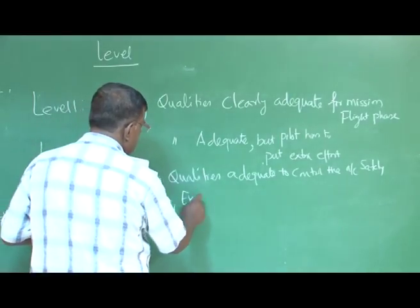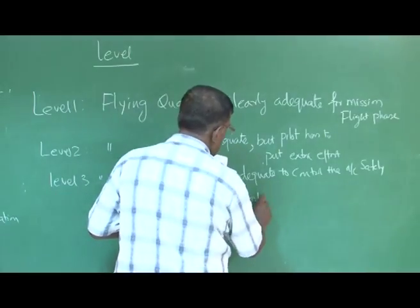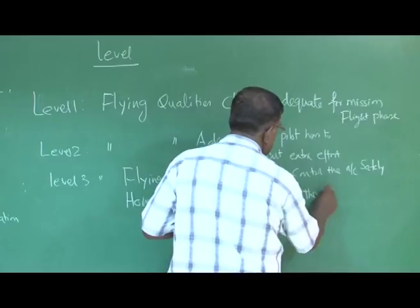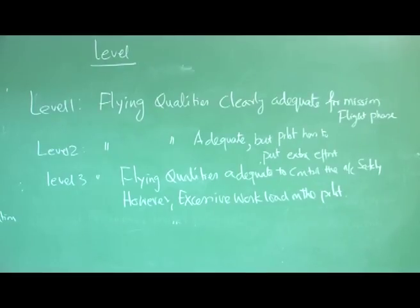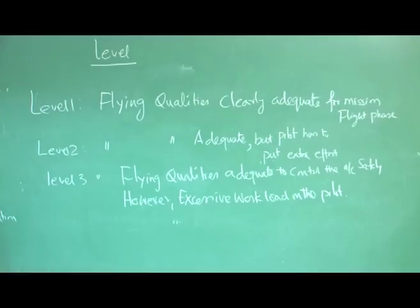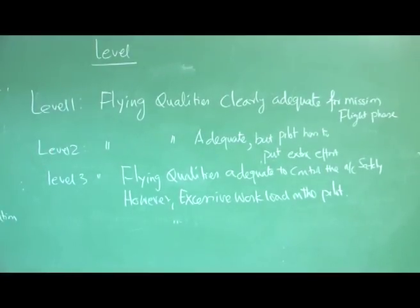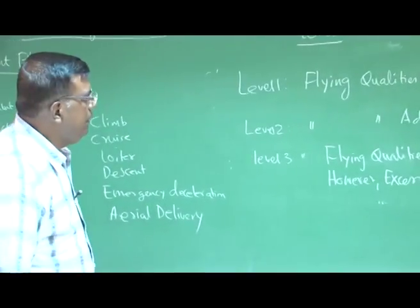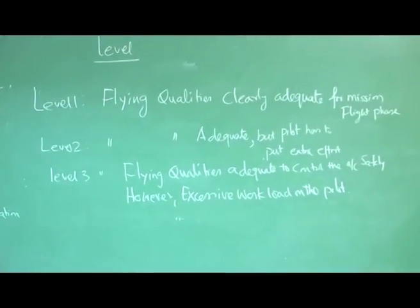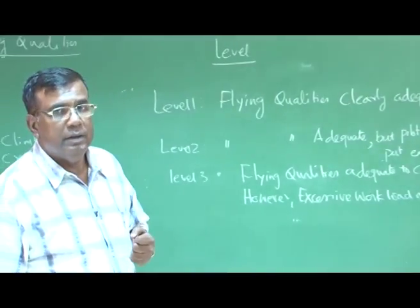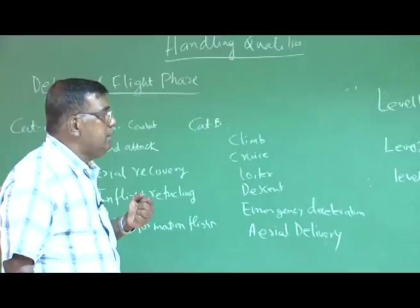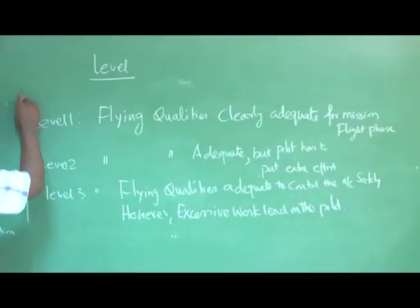Level 1 says flying qualities are clearly adequate for the mission flight phase — absolutely fine. Level 2 means it is adequate, but the pilot has to put a little bit of extra effort. Level 3 means flying qualities are adequate to control the airplane safely, but the pilot has to put a lot of extra effort. Understanding these three levels — level 1, level 2, level 3 — is extremely important.